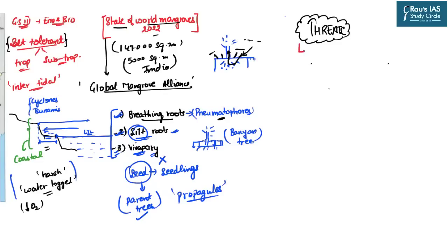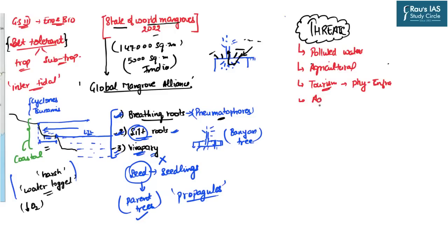Mangrove ecosystems today are facing several threats. These include polluted waters discharged from industries, heavy agricultural load, high demographic loads from ecotourism and associated physical infrastructure development. Aquaculture and fisheries along the coasts obstruct tidal flows, which is one of the biggest threats. Discharge of untreated domestic wastewater into rivers further impedes natural intertidal flow and the mixing of freshwater and saline water.